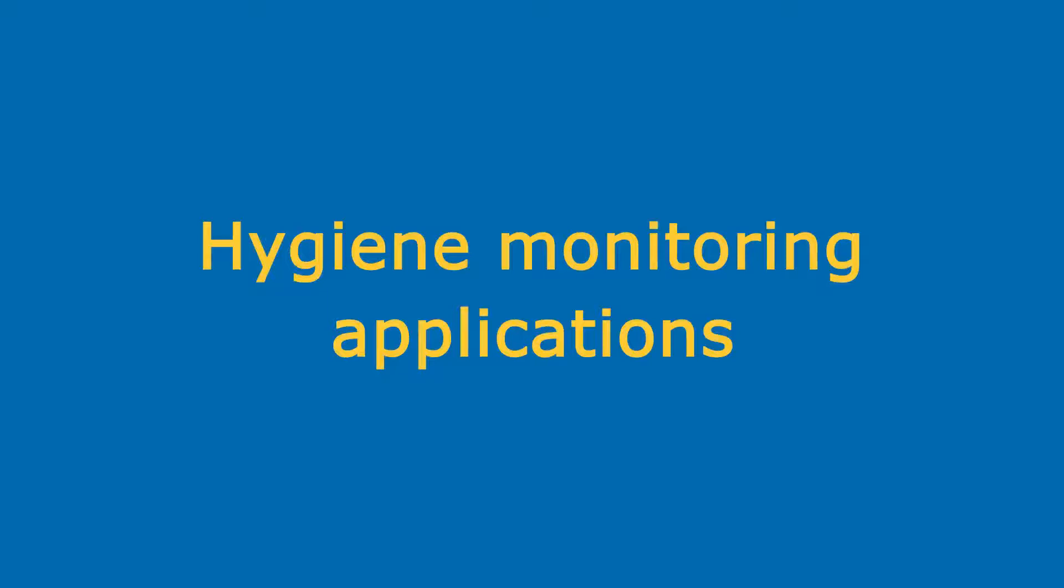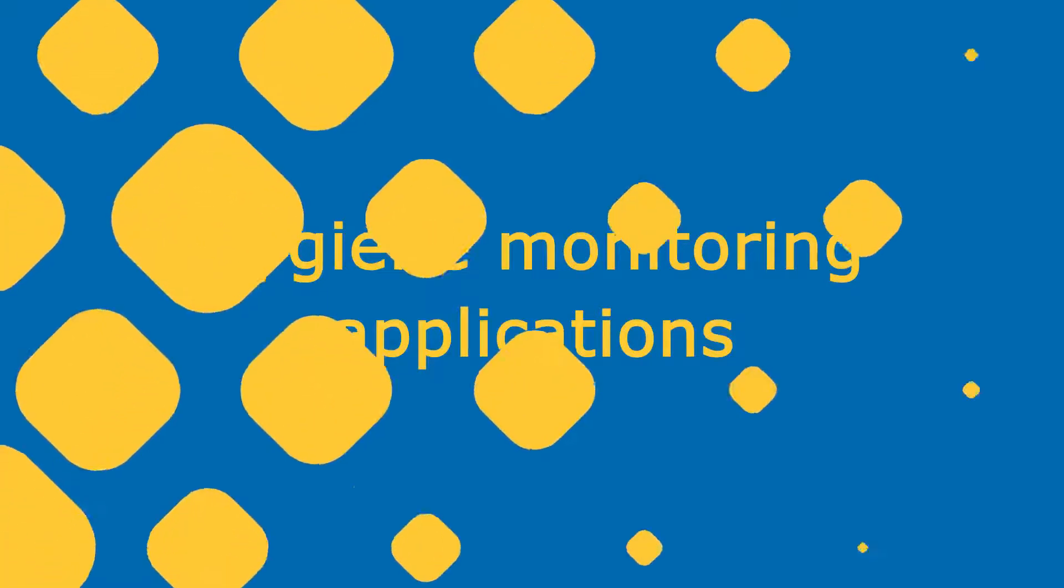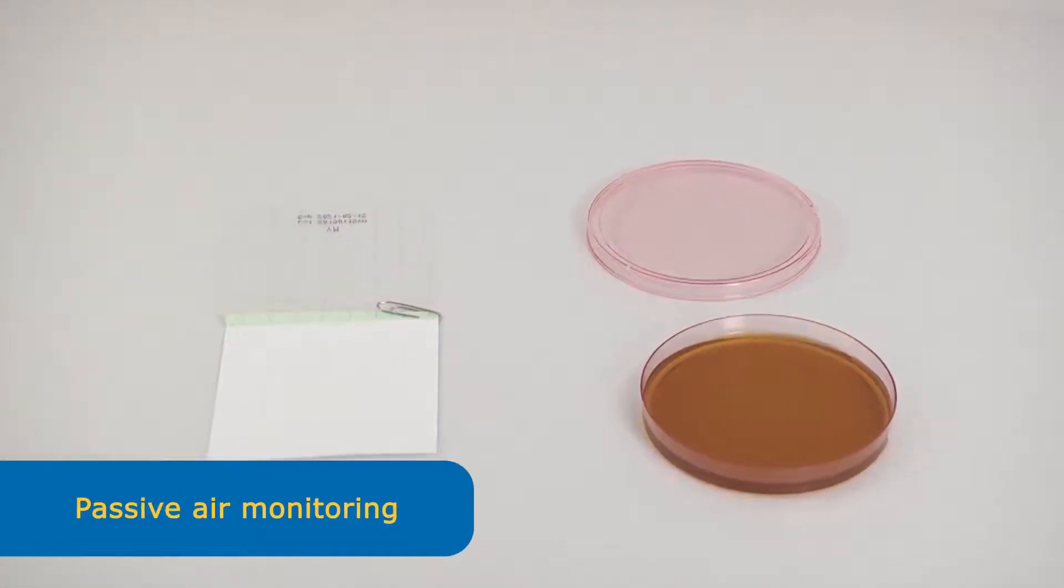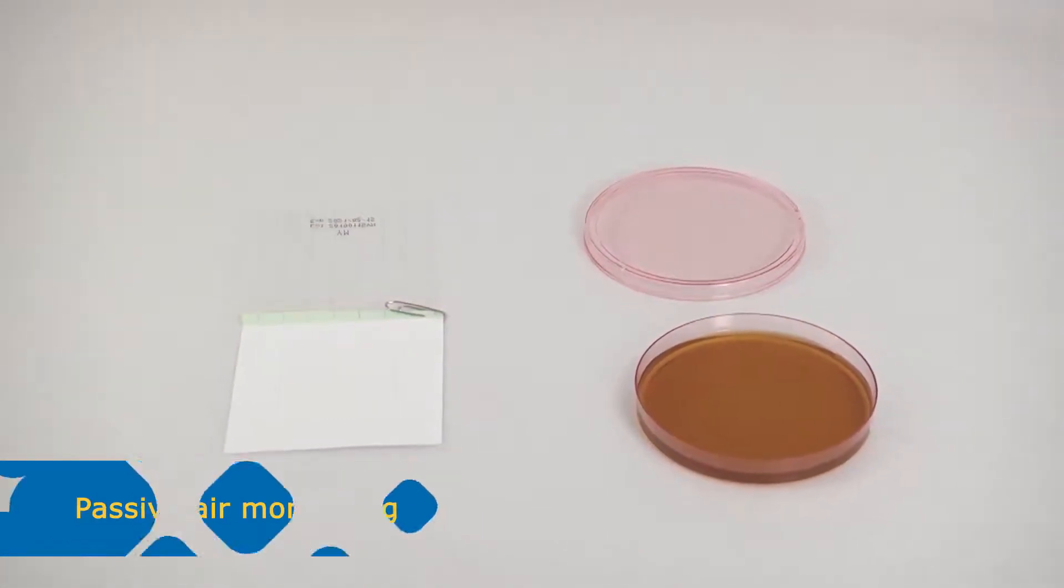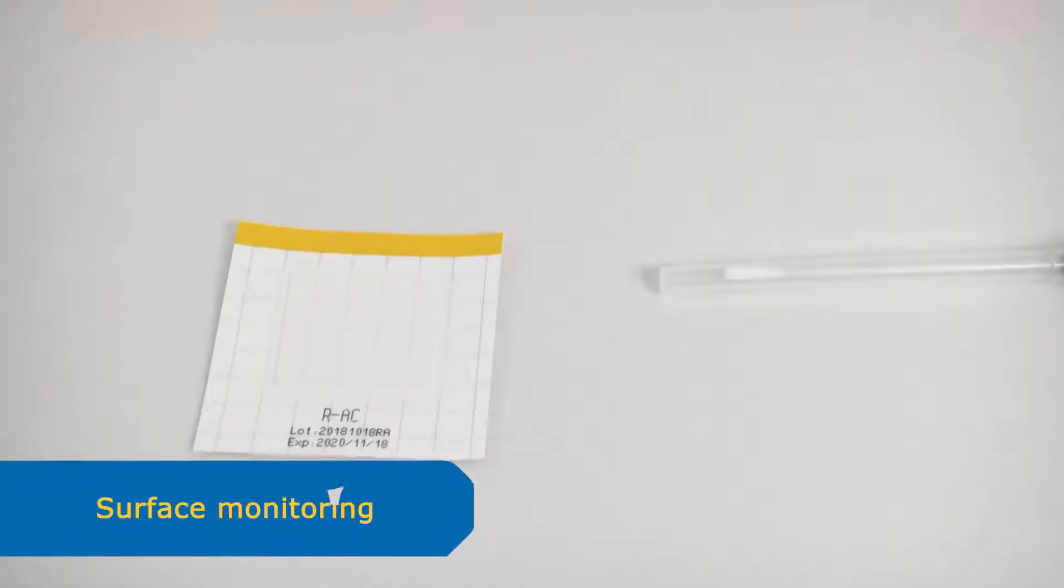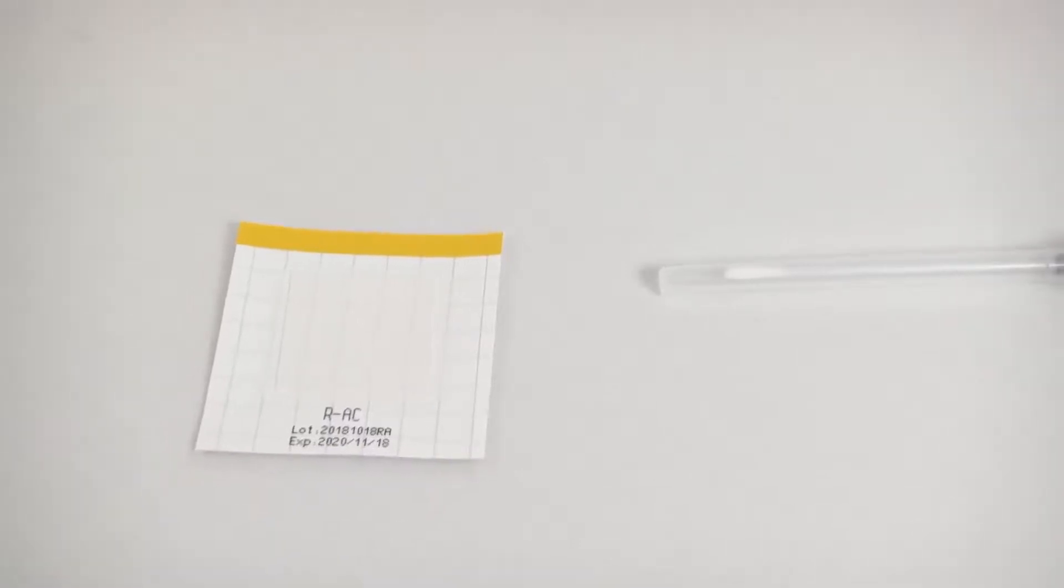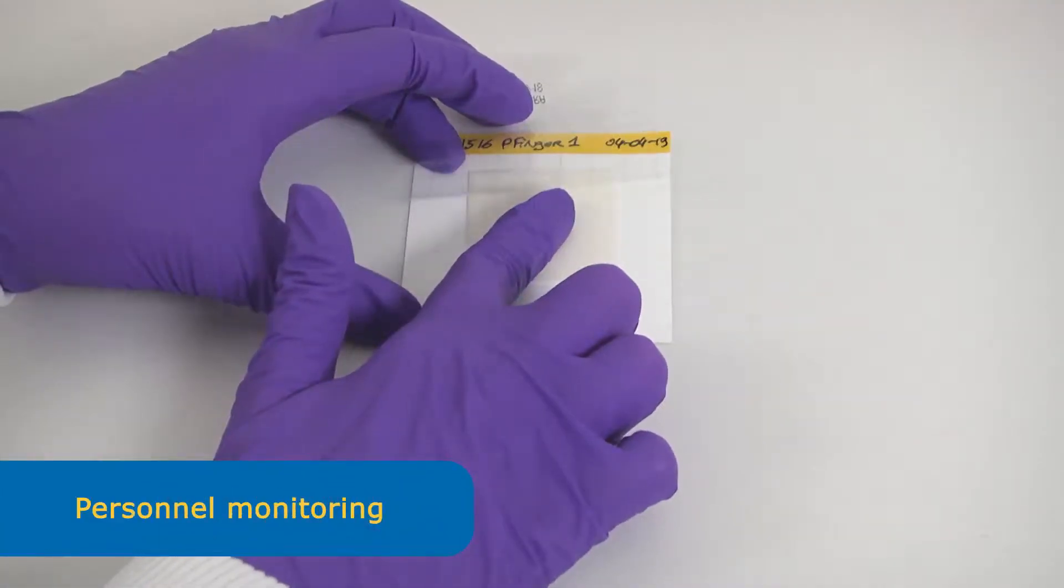MC MediaPad is a versatile product. It can also be used for hygiene monitoring. Just open the pad for passive air monitoring. For surface monitoring, simply use a swab or a pad for direct surface contact. It is also suitable for personnel monitoring.